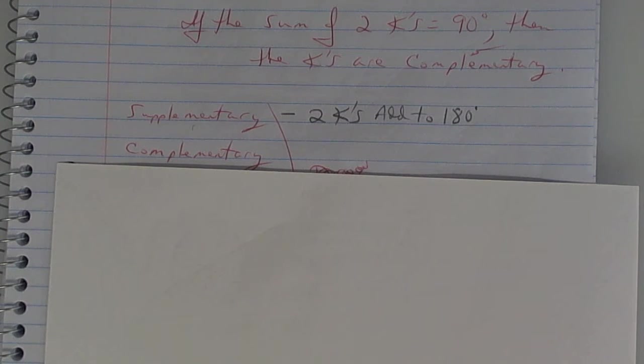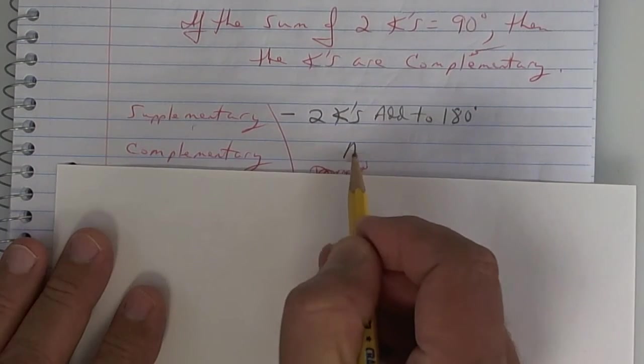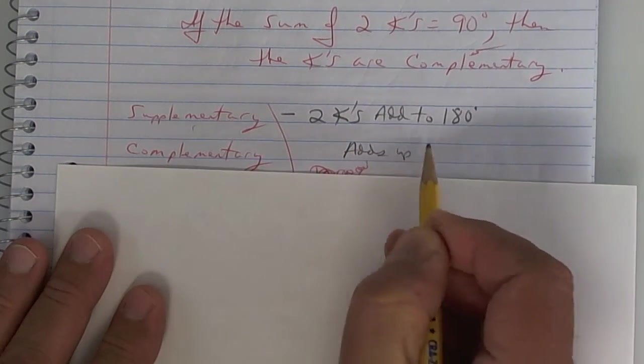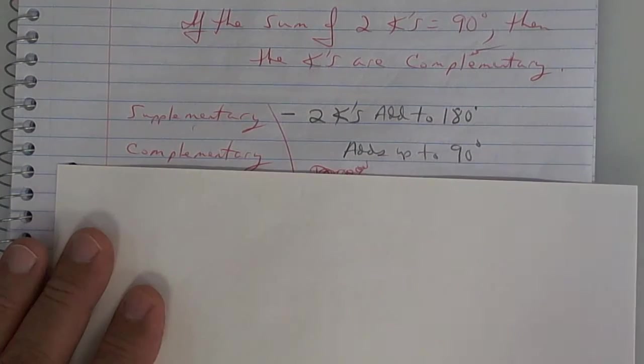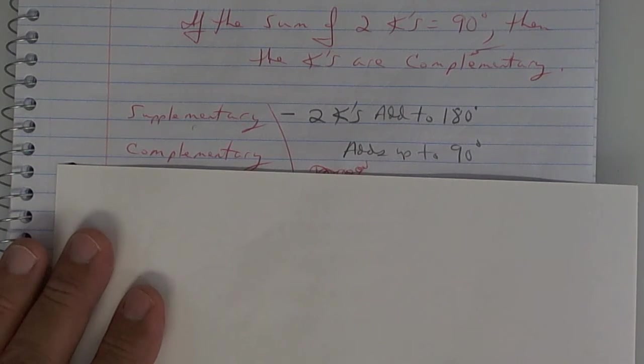Now, complementary is a nice thing in the real world when someone says, hey, you look really nice today. That's a compliment. You say, thank you. Think about the last time someone said something nice to you, or you said something nice to them. All right? So, complementary adds up to what? Adds up to 90 degrees. Everybody okay with that? All right, next.